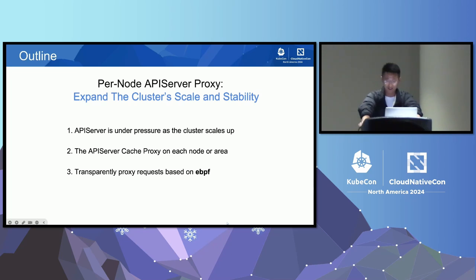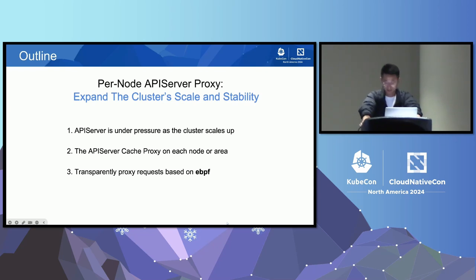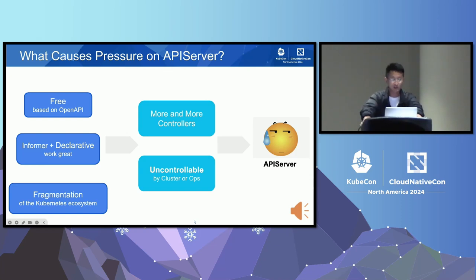Our goal is to expand cluster scale and stability. As we know, as the cluster scales up we may encounter various problems, and this session focuses on optimization of the API server. I will introduce a solution to reduce the stress on the API server by a proxy, which can be deployed in global or regional nodes. Finally, I will explain how to proxy API server requests transparently. Let's listen to what iSaber has to say.